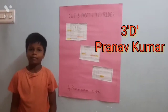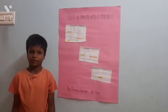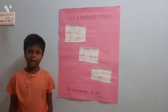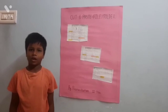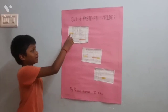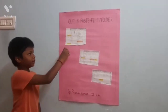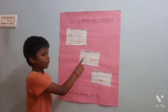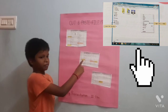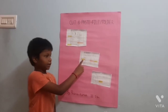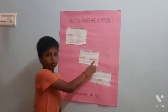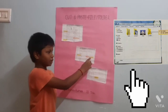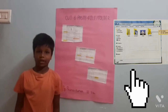Good morning to all. I am Saranam from 3rd standard C section in Cardinal Public School. Today I am going to explain how to cut and paste a file or folder. Select the file or folder to be moved. Right click the mouse button and click the Cut option. Select the location where the file is to be moved and open that folder by double clicking it. Now right click and click the Paste option. The file will be moved to the new location.